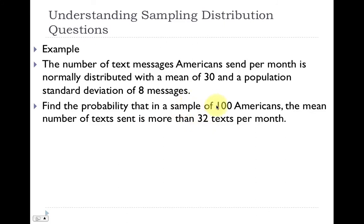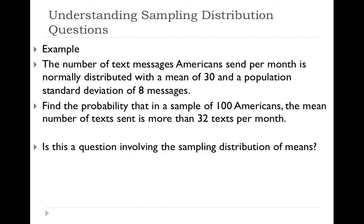In a sample of 100, the mean represents the sample mean for that group of 100. You are being asked for the probability that the sample mean is more than 32. Whenever you are asked for the probability that a sample mean is more than, greater than, or between two values, you are going to use the sampling distribution. So yes, this question does involve the sampling distribution of means. The mean of all sample means equals the mean of the population, which is 30.